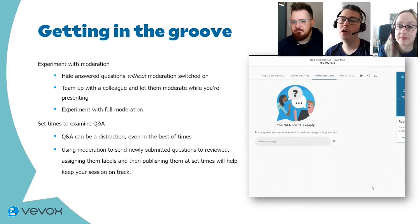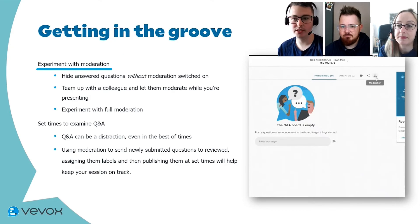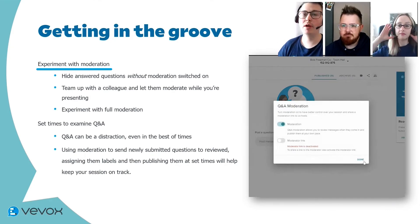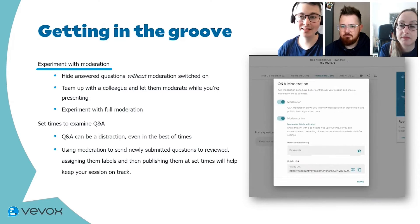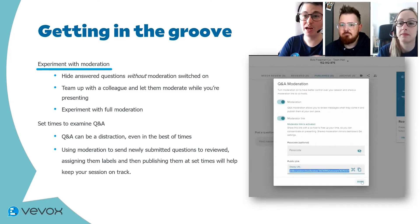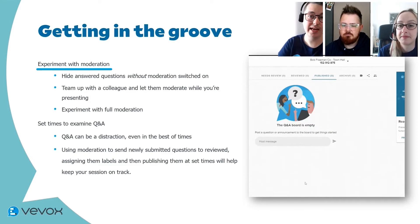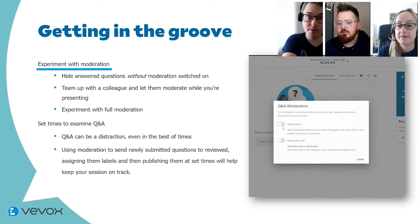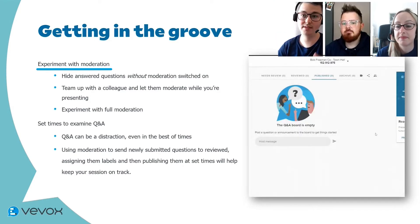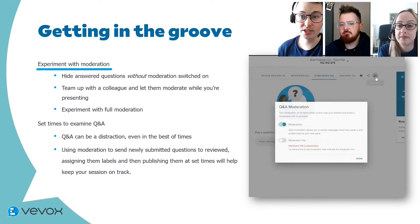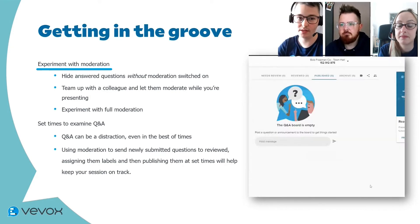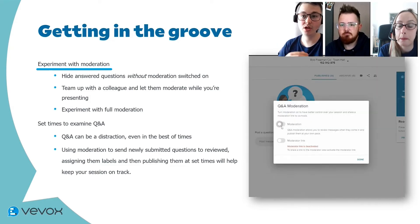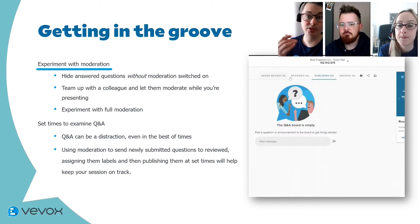First, decide if you really need the moderation feature for your meeting or event. What we always recommend at VVOX is to have a test — play around with your settings, switch moderation off, send in some test questions, remove them from the published area to the archive, and practice how you'd run Q&A in a live session. If you think you might need moderation — for better organization and hiding messages before they go live — switch it on and practice collaborating with a colleague who can also control it.